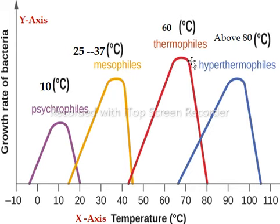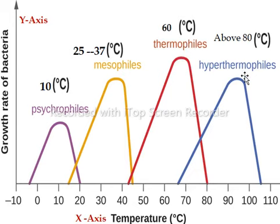Then we have another type of bacteria called thermophiles. As the name indicates, they are temperature-loving. They grow best at 60 degrees centigrade, which is the optimum temperature for thermophiles. An example is Thermus aquaticus. Then at last, we have hyperthermophiles or extremophiles. They grow at about 80 to 108 degrees Celsius. Examples are Sulfolobus and Methanococcus bacteria.